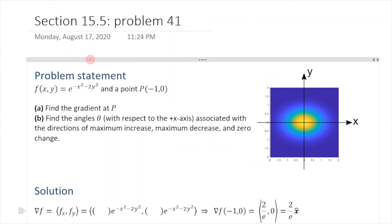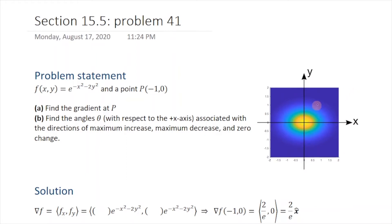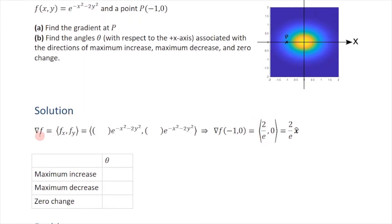Problem 41 in 15.5 gives you a function of two variables. Here I'm showing a color plot of this function, where the color signifies the value. You're given a point negative 1, 0, called point P. You're asked first to find the gradient at point P, and then to find angles theta with respect to the positive x-axis associated with the directions of maximum decrease, increase, and zero change — essentially, in what direction is the function changing the fastest.